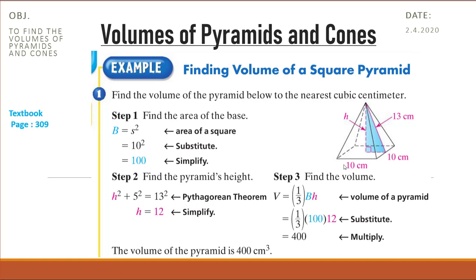And to find the height, the height is not given in the question, so we are going to use the Pythagorean theorem. H equals square root of the hypotenuse squared minus the side squared. And the result will be 12. So the height of the pyramid is 12.